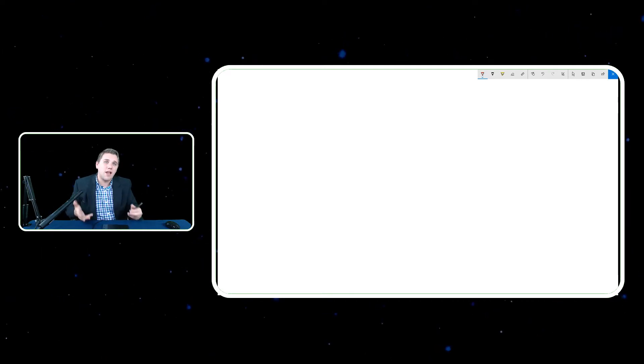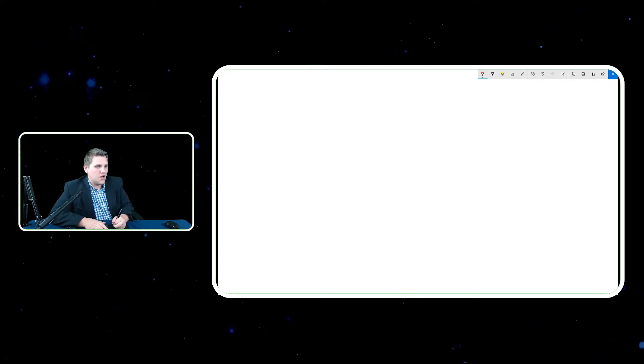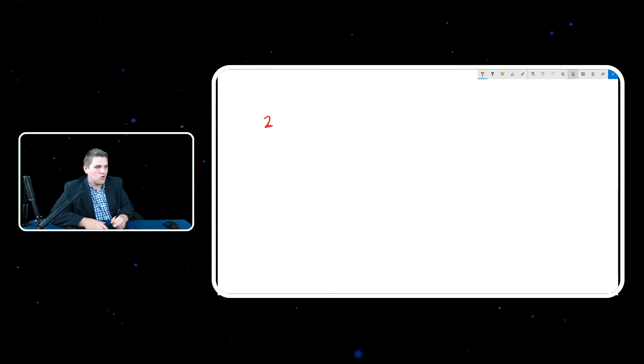In this case, we're actually going to develop a histogram together. So let's say we have some data of some ages. We have a two-year-old, a two-year-old, a three-year-old, a four-year-old, a seven-year-old, a six-year-old, a five-year-old, a six-year-old, a seven-year-old, six-year-old, five-year-old, four-year-old, and eight-year-old.